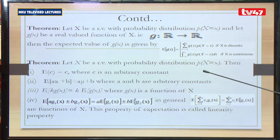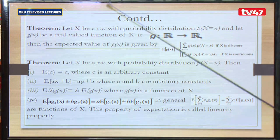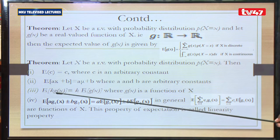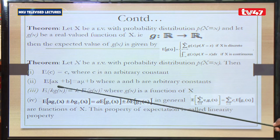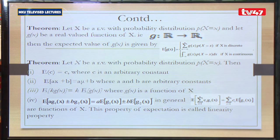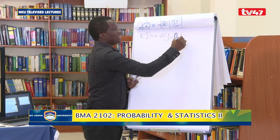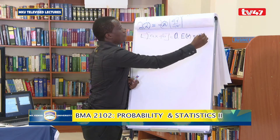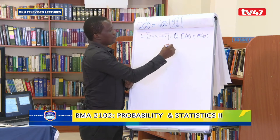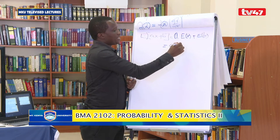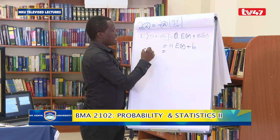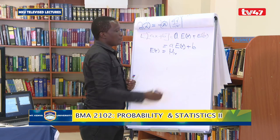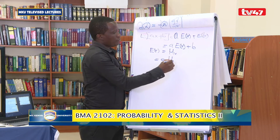Another theorem: if x has a given probability distribution, then the expected value of a constant is that constant. For example, the expected value of 5 is 5. The expected value of an expression of x, say g(x) = ax + b, means you apply expectation to get a times E[x] plus the expected value of b. Since the expected value of a constant is a constant, this simplifies to a times E[x] plus b, which can be written as a·μ_x + b.